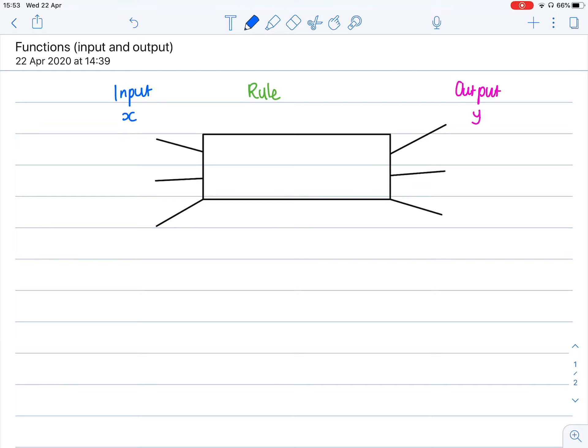But if we make it slightly more difficult, you have to take your x value. Remember x is your input. You have to take your x value, you have to times it with two. Please remember this is the same as saying x times two, 2x is x times two. And you have to add three. And that will give you y.